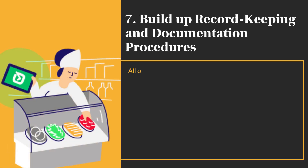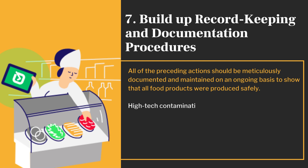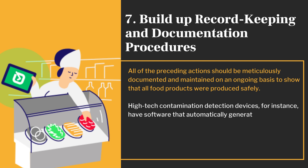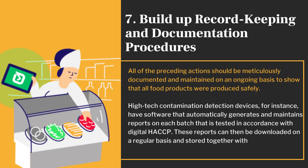All of the preceding actions should be meticulously documented and maintained on an ongoing basis to show that all food products were produced safely. High-tech contamination detection devices, for instance, have software that automatically generates and maintains reports on each batch that is tested in accordance with digital HACCP. These reports can then be downloaded on a regular basis and stored together with all other papers pertaining to food safety in one spot.